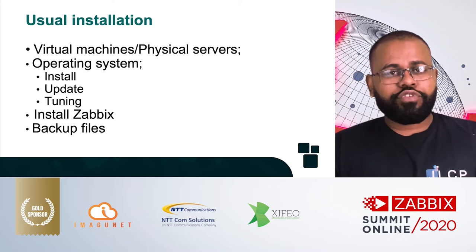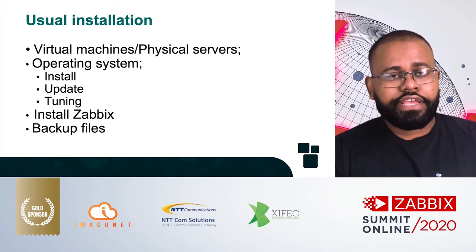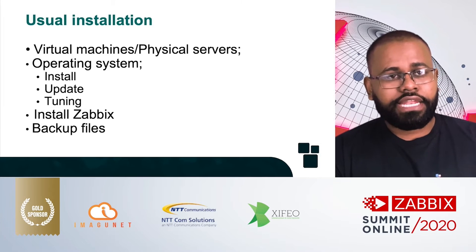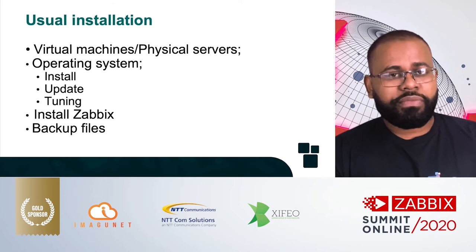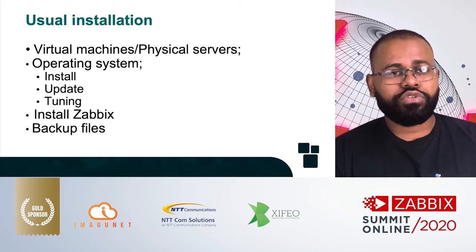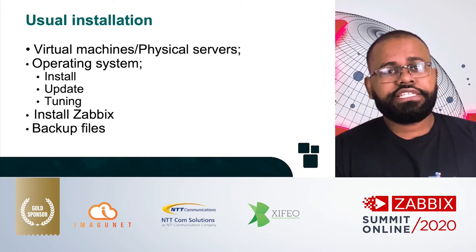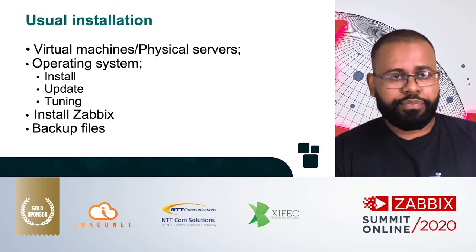There are five ways to install Zabbix: using packages, compiling, using Docker, using cloud, or using appliances. However, to install an environment that allows Zabbix to be fault tolerant is more complex. We use virtual machines or physical servers to install Zabbix directly on the operating system. In this scenario, it is necessary to install the operating system, update the system, and tune it to improve performance.